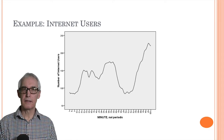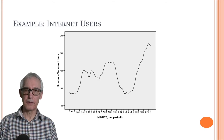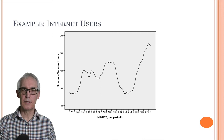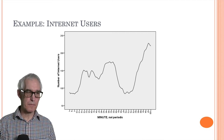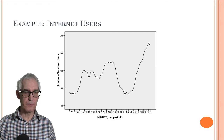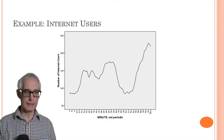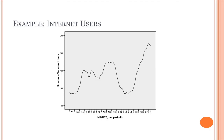Here's some example data taken from the book by Hyman and Makridakis — it shows internet users per minute over a certain period of time. Looking at this data, you can see it definitely doesn't appear to be stationary: there's a tendency for an upward trend, and the fluctuations are certainly not around a constant mean.